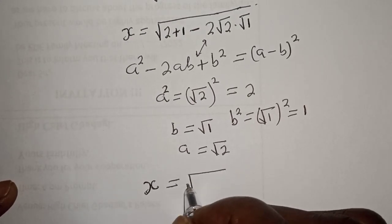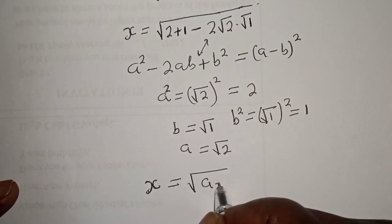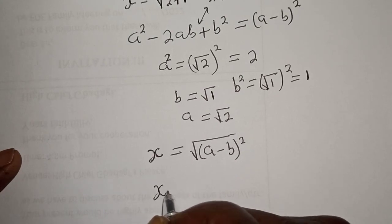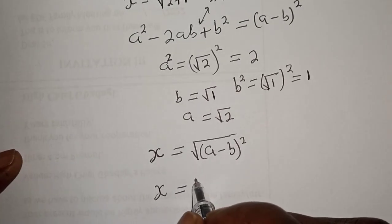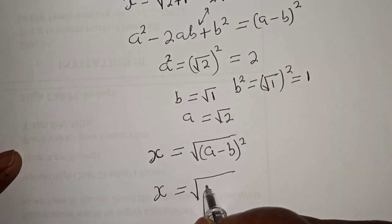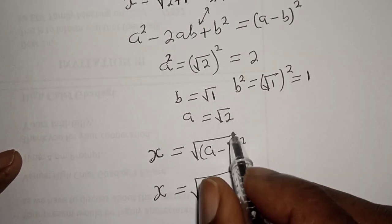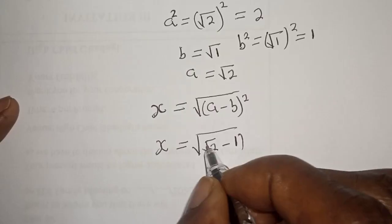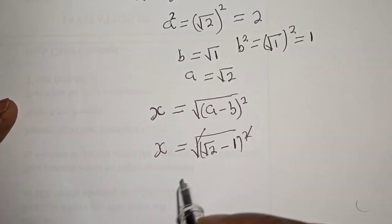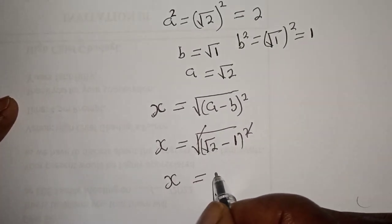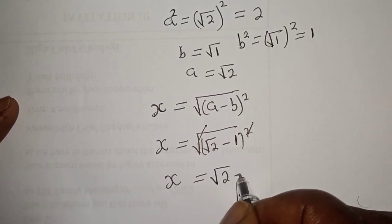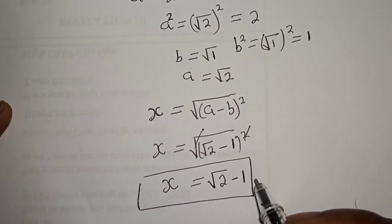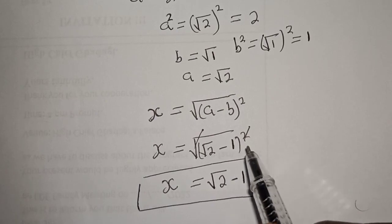Therefore, s is equal to the square root of (a minus b) all squared. This simplifies: s is equal to the square root of (square root of 2 minus square root of 1), and the square root and the square cancel. So s is equal to square root of 2 minus 1, and this is the final answer. Thank you for watching — don't forget to like, share, comment, and subscribe. Bye bye!